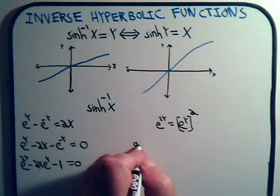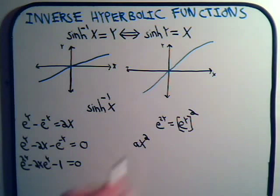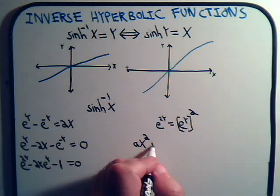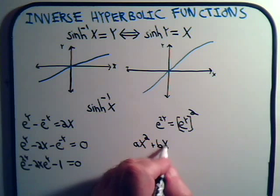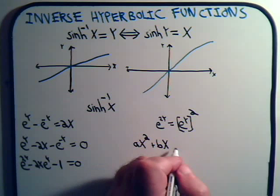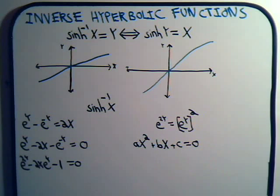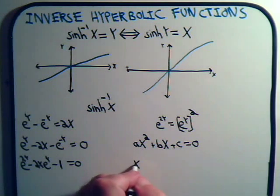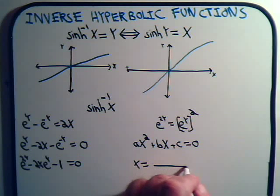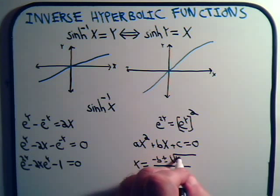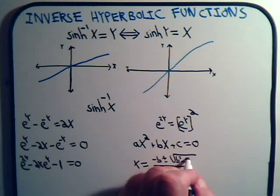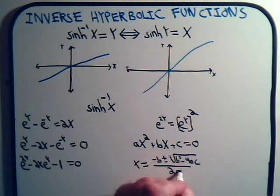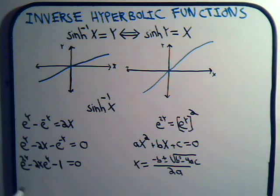The general quadratic form is a times the variable squared plus b times the variable plus some constant equals zero. When we have a quadratic equation we can solve it with the quadratic formula: negative b plus or minus the square root of b squared minus 4ac, divided by 2a. Here we solve not for x, but for e to the y.